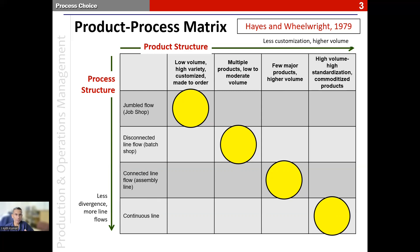This matrix is called the product-process matrix — it helps us map product types with process types. This matrix was first proposed by Hayes and Wheelwright in 1979. One thing that has obviously been missed in this matrix is the project type of process, which by extension would come at a separate position in the matrix if it were to be introduced.